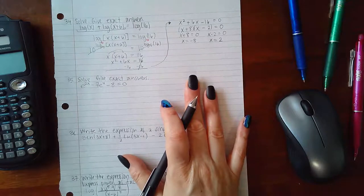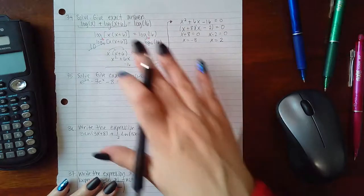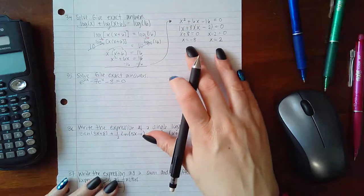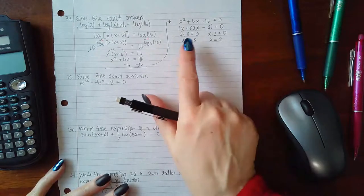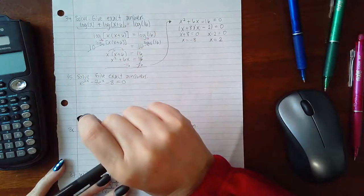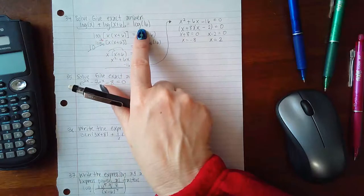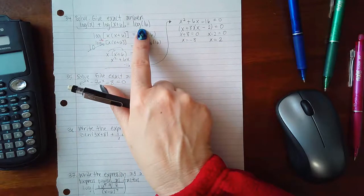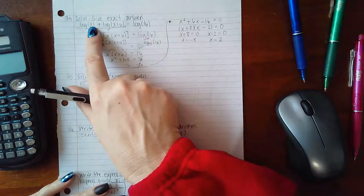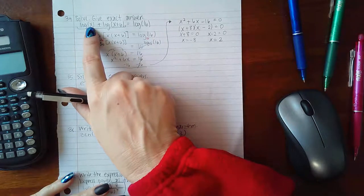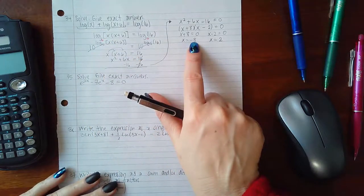I found two solutions. However, we could have what are called extraneous solutions, which means the algebra gives you these solutions but they may not necessarily check out. If I remember the big thing about logs, the arguments and bases cannot be negative. All of these have base 10 which is positive, so we don't need to check the bases. What we do need to verify is the arguments. If I plug negative 8 into this argument, I'm going to have the log of a negative number, and that you simply cannot have.